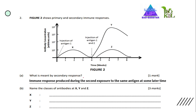Question B: Name the classes of antibodies at X, Y, and Z. Antibody at X is IgM because IgM is produced during the first exposure to the antigen. For point Z, the class of antibody is also IgM because this is a new antigen introduced in the body, so the body identifies it as a first exposure, and IgM will be produced.